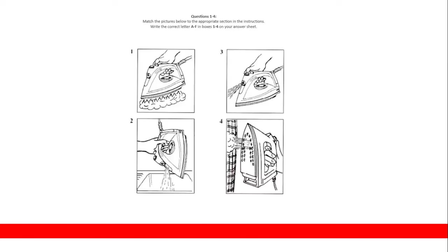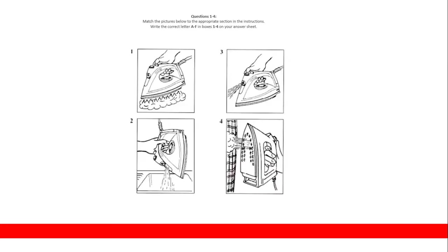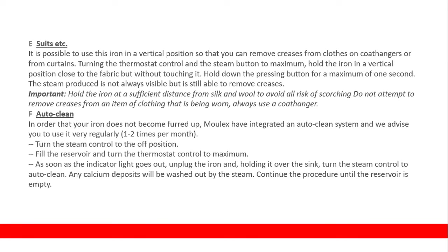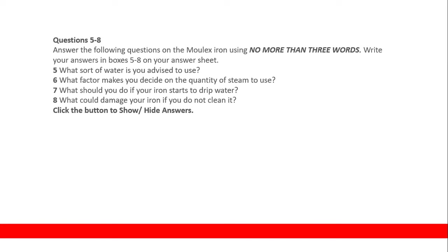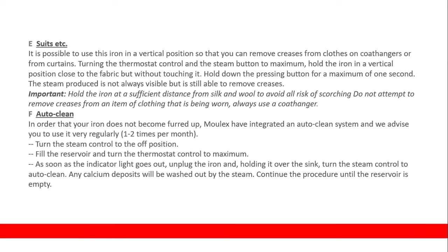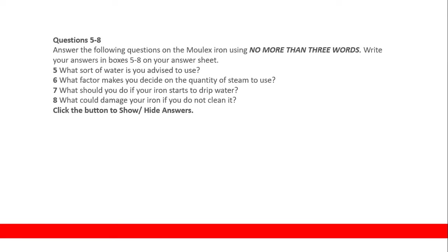For picture four — vertical ironing — it is possible to use this iron in a vertical position to remove creases from clothes on coat hangers or from curtains. Now, sentence completion for the iron manual: 'What sort of water is advised to use?' Your iron is designed to function using tap water; however, it will last longer if you use distilled water. So 'distilled water' is the right answer.